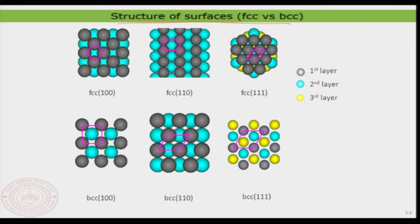We also learned how to name surfaces, where the name is always related to the HKL index — the so-called Miller index — of a surface or plane of a crystal. We named surfaces according to the plane through which we cut them. Depending on the Miller index, whether it is 100, 110, or 111, the surfaces have different shapes. The 110 and 100 surfaces are much stronger in terms of adsorption compared to a 111 surface.